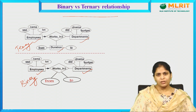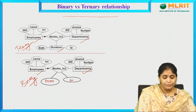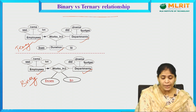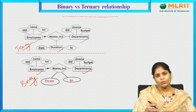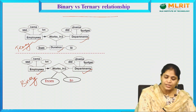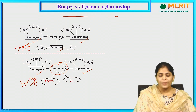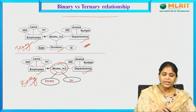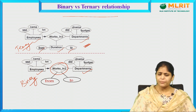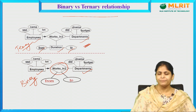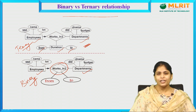We can consider either of these two ER models. In the first model, employees work in departments, and the duration — from which date to which date the employee works — is captured using descriptive attributes on the relationship. In the second model, the duration period is maintained in a separate entity set with attributes 'from' and 'to'. That is the basic difference between binary and ternary relationships. If we want data organized clearly and need to maintain large volumes of data, we prefer the ternary relationship.